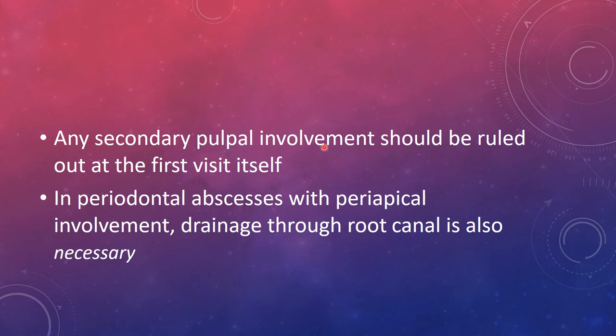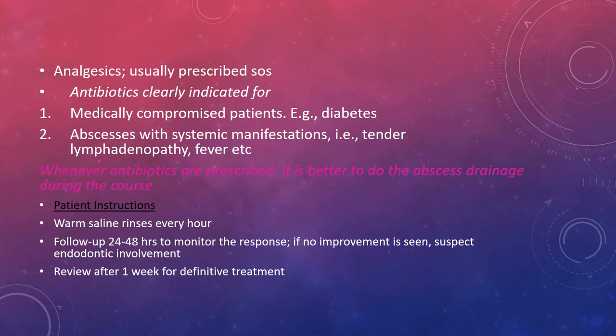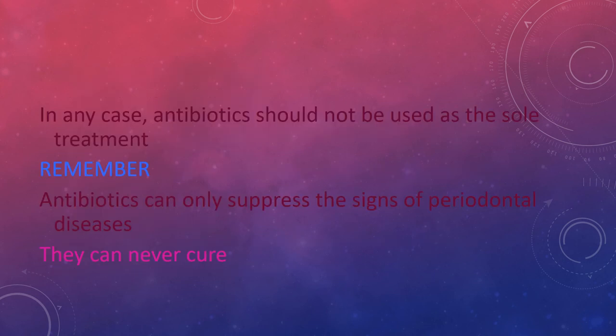Any secondary pulpal involvement should be ruled out at the first visit. In periodontal abscesses with periapical involvement, drainage through the canal can also be done. Post-treatment, analgesics can be prescribed; antibiotics are clearly indicated for medically compromised patients, diabetic patients, and abscesses with systemic manifestations such as tender lymph nodes or fever. Whenever antibiotics are prescribed, abscess drainage should be done during the course. Patient instructions include warm saline rinses every hour, follow-up at 24 to 48 hours to monitor response, and review after one week for definitive treatment.